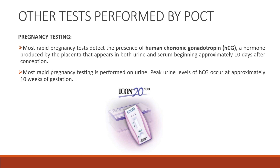Pregnancy testing is the most common POCT. Most rapid pregnancy tests detect the presence of human chorionic gonadotropin (HCG), a hormone produced by the placenta that appears in both urine and serum beginning approximately 10 days after conception. Most rapid pregnancy testing is performed on urine. Peak urine levels of HCG occur at approximately 10 weeks of gestation.